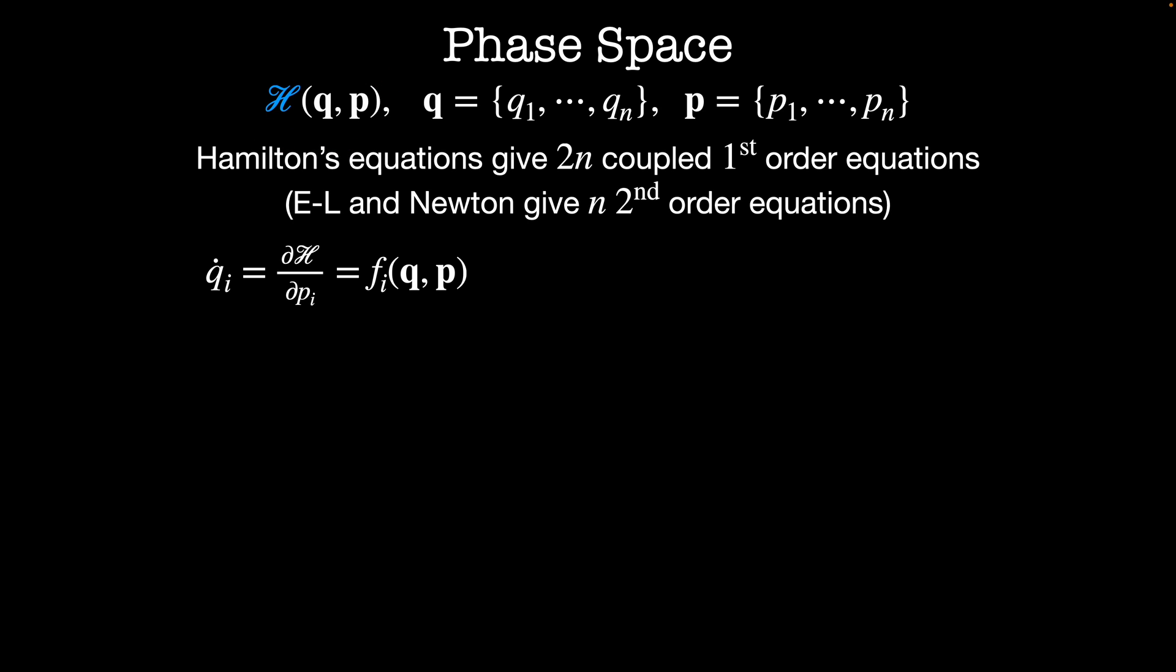Hamilton's equations are: the rate of change of Qi is equal to dH/dPi, and this is some function we're going to call Fi of the vectors Q and P. We have an equivalent equation: the rate of change of the generalized momenta Pi equals minus the derivative of H with respect to Qi. This is equal to some function Gi, which again is a function of the vectors Q and P.